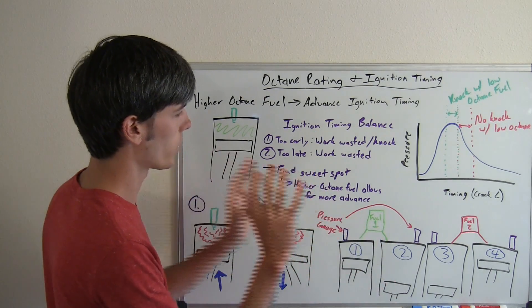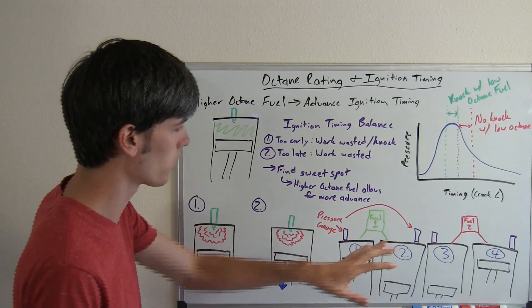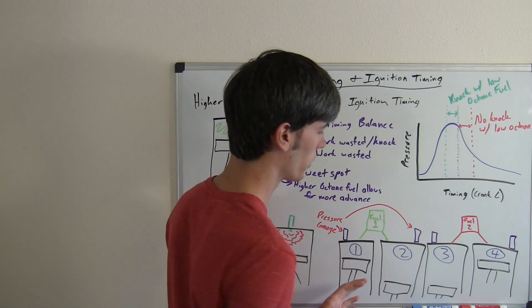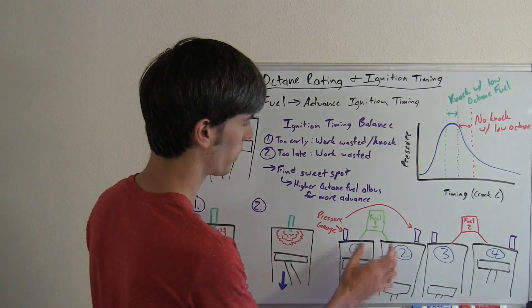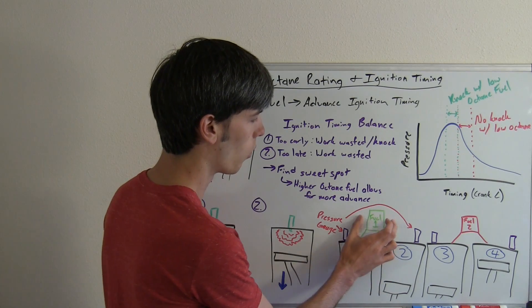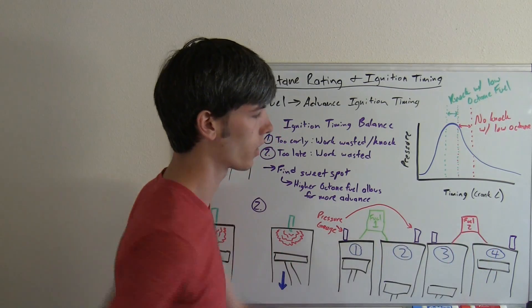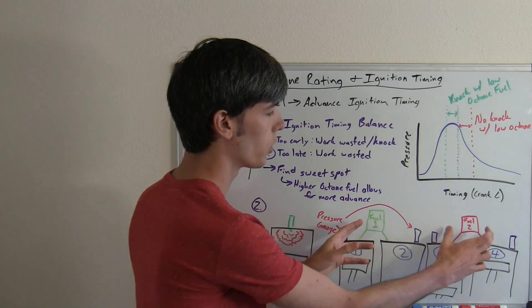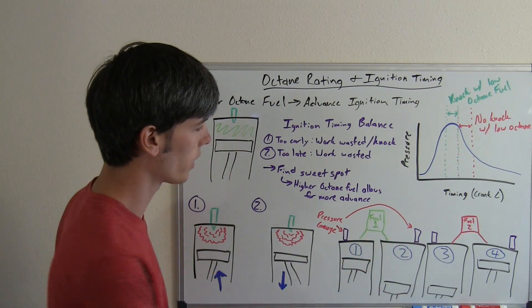Now, so what Shell has done, and this is actually a really cool test, is they've got this four cylinder engine. Two of the cylinders are going to be running on one fuel and the other two cylinders are going to be running on a different fuel. And these fuels are going to have different octane ratings. One's going to be low, one's going to be high.